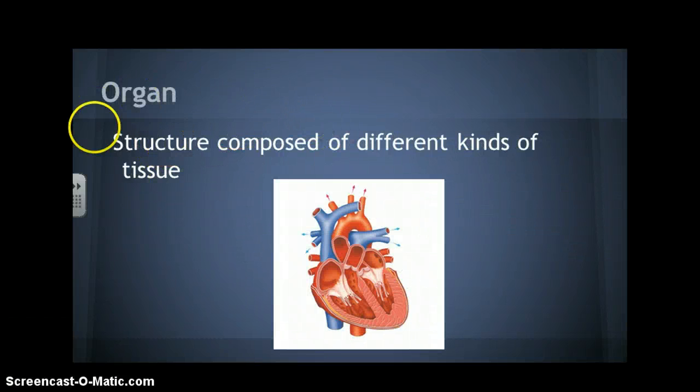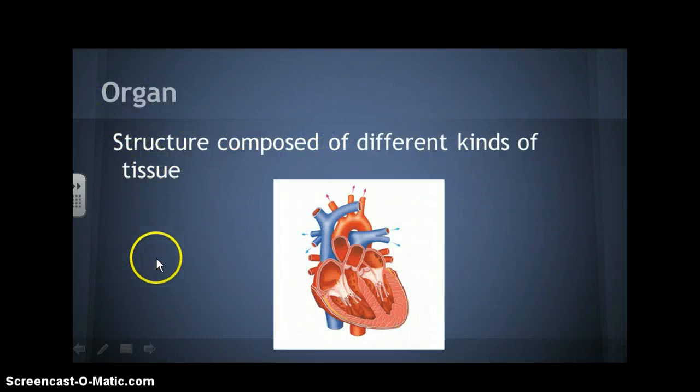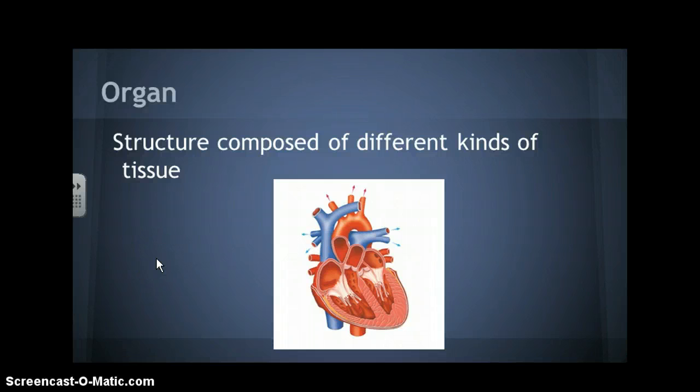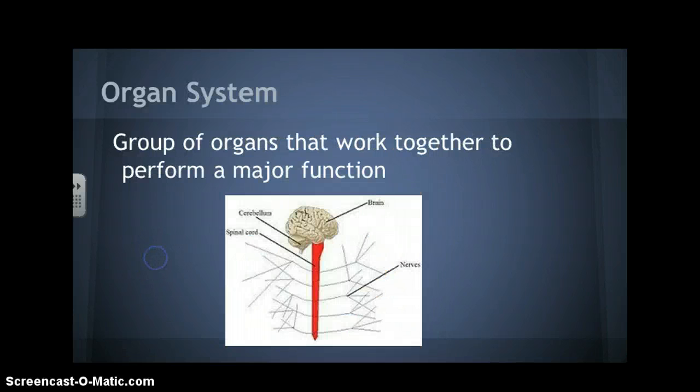Organs are structures that are composed of different types of tissue. Here you have a diagram of a heart, which is an example of an organ.